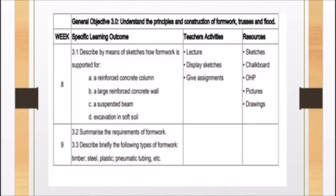Based on the third general objective, the student is expected to understand the principles and construction of formwork. The student should describe by means of sketches how formwork is supported for a reinforced concrete column, a large reinforced concrete wall, a suspended beam, and excavation in soft soil. The student is also expected to summarize the requirements of formwork and describe briefly the following types of formwork: timber, steel, plastic, pneumatic, and tubing formwork.